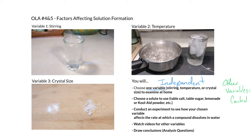Choose your independent variable, choose the crystals that you're going to use, and then you're going to conduct an experiment to see how your chosen variable affects the rate at which a compound dissolves in water. The rate at which a compound dissolves in water is our dependent variable. When you change the independent variable, you're watching to see how the dependent variable changes.